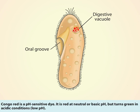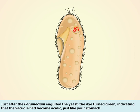Congo Red is a pH-sensitive dye. It is red at neutral or basic pH, but turns green in acidic conditions, low pH. Just after the paramecium engulfed the yeast, the dye turned green, indicating that the vacuole had become acidic.